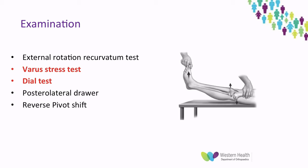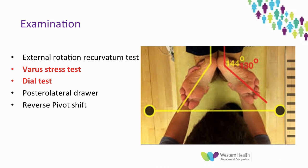When we classify these injuries, we rely on the varus stress test and the dial test. The varus stress test is performed in terminal extension and at 30 degrees of knee flexion. At 30 degrees, the examiner measures the gapping: zero to five millimetres is mild or grade one, five to ten is grade two, and greater than ten millimetres is grade three. At 30 degrees, a positive test is indicative of an isolated lateral collateral ligament injury. However, if positive in terminal extension, this often means the PCL is injured as well, as it also acts as a varus restraint in terminal extension.